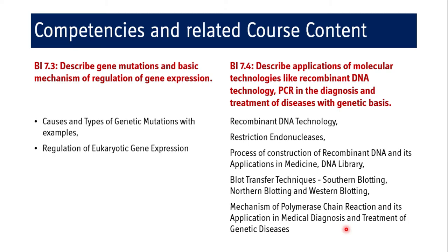In summary, there are four competencies. Competency 7.1 deals with structure and the cell cycle. The second competency BI 7.2 covers almost all genetic processes like replication, transcription, translation, and post-transcriptional as well as post-translational mechanisms. BI 7.3 covers gene mutations and basic mechanisms of gene expression, and BI 7.4 deals with various techniques and technologies covered in molecular biology.